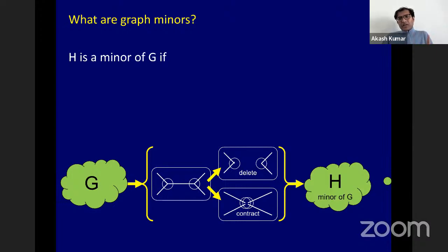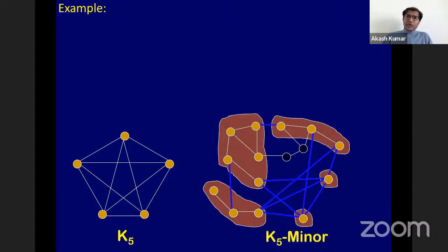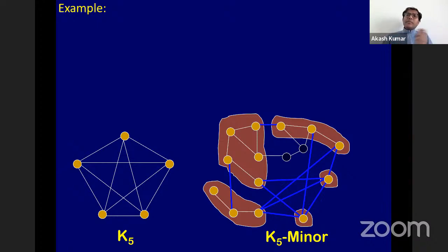Let's verify this notion through an example. I claim that the graph on the right contains a copy of the complete graph on five vertices as a minor. Notice that if you shrink the five red islands into one single mega-vertex each, you will have vertex-disjoint paths shown in blue running between every pair of islands. There are five elements and vertex-disjoint paths running in blue between every pair, confirming that the graph on the right contains a K5 minor.